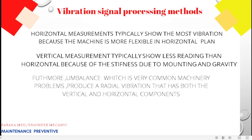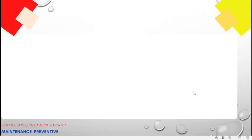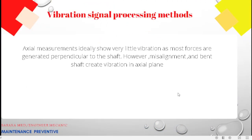Horizontal measurements typically show the most vibration because the machine structure is more flexible in the horizontal plane. Vertical measurements typically show less vibration than horizontal because of the stiffness due to mounting and gravity. Imbalance is a very common problem that produces radial vibration with both vertical and horizontal components. Since the machine is more flexible horizontally, excessive horizontal vibration is a good indicator of imbalance.